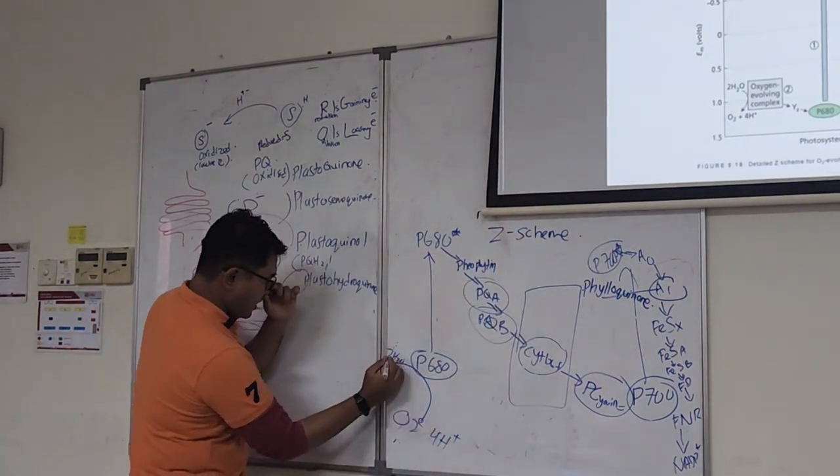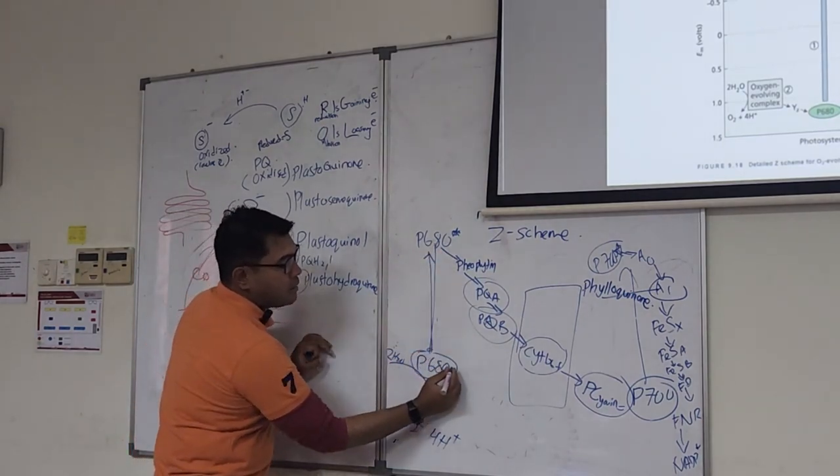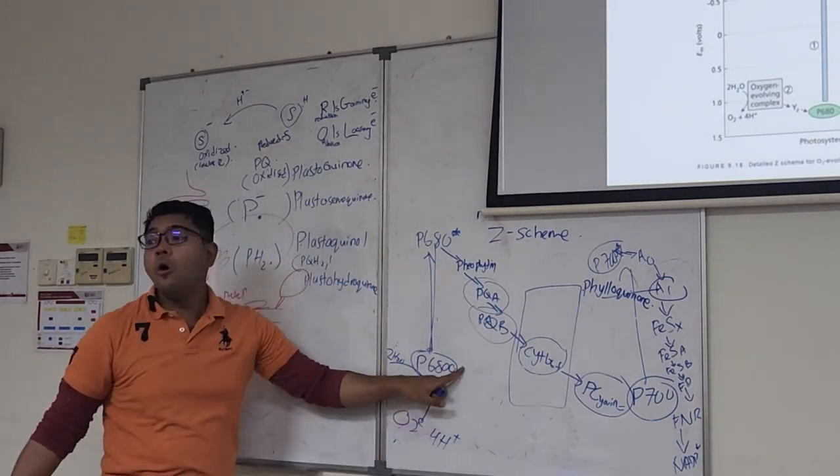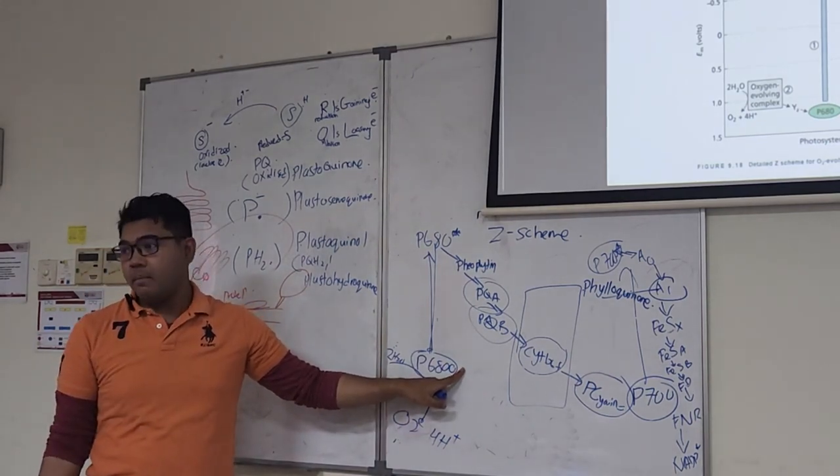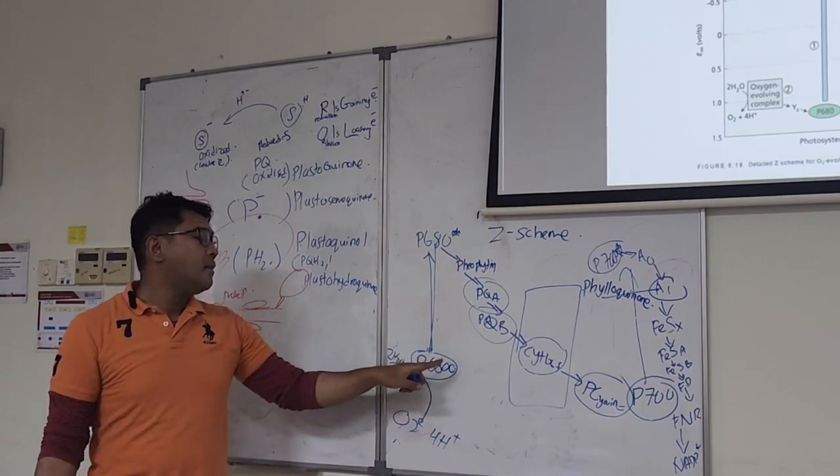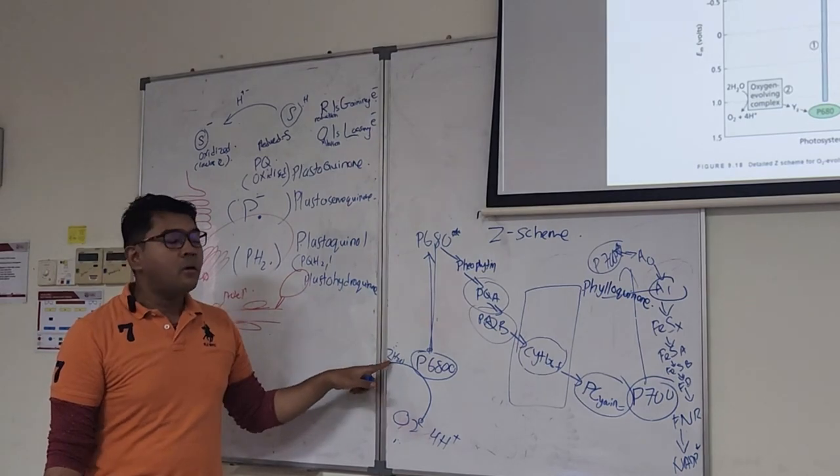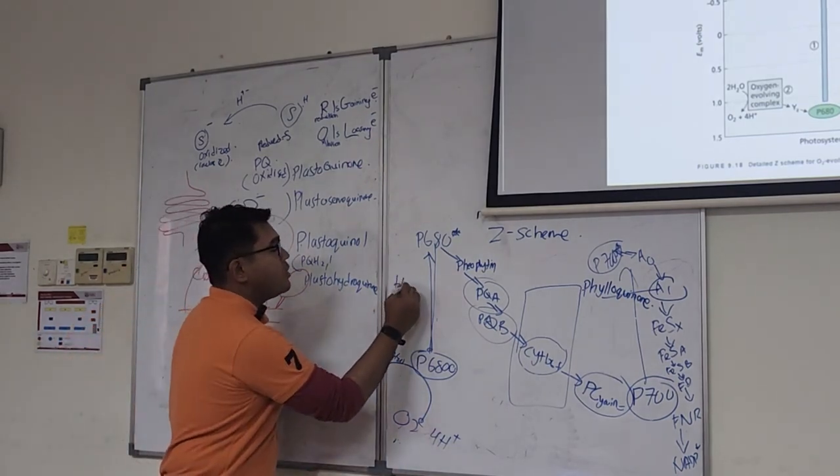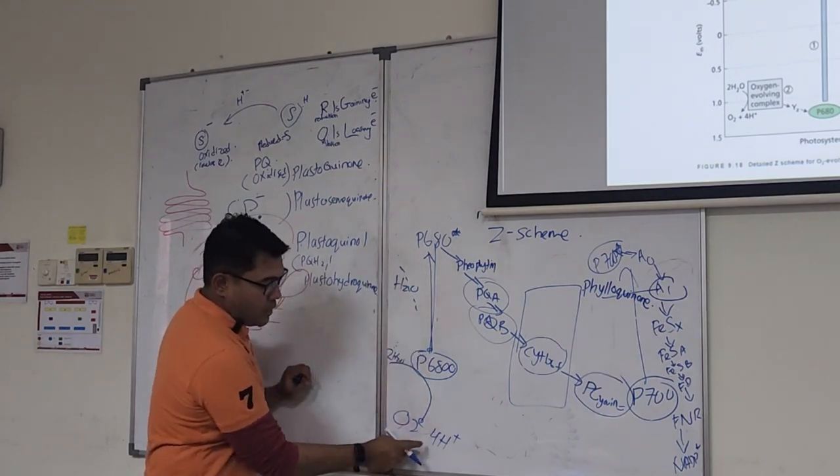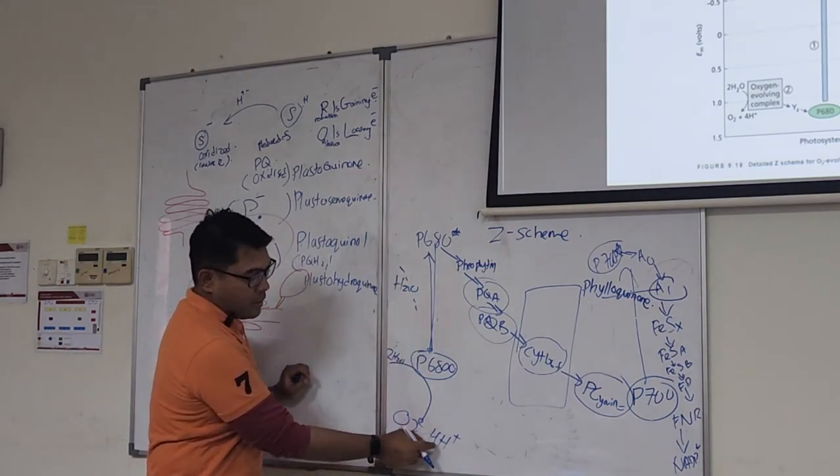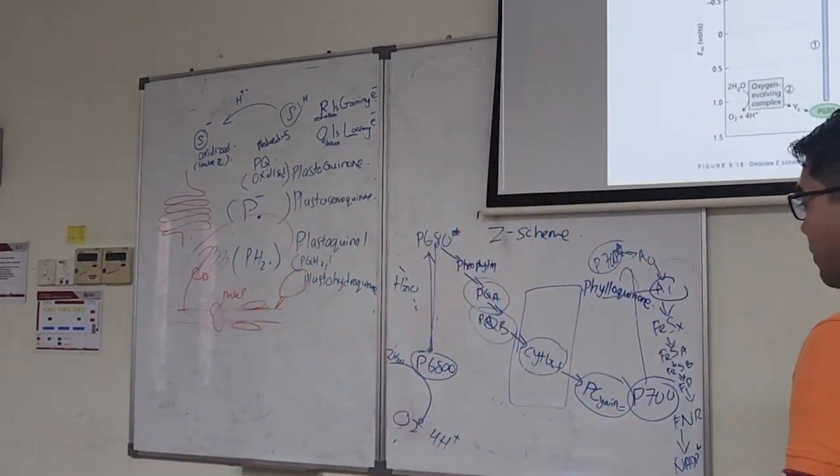Two molecules of water are split because the moment it gets excited, this thing contains a hole. This hole needs to be filled in by somebody. And who is that somebody? This thing steals electrons from water. And then water is oxidized. Because water is oxidized, H2O is split. When it is split, that's why you got oxygen plus four hydrogen.